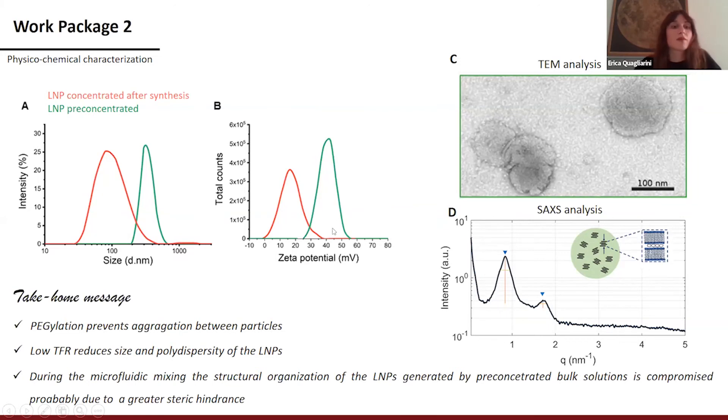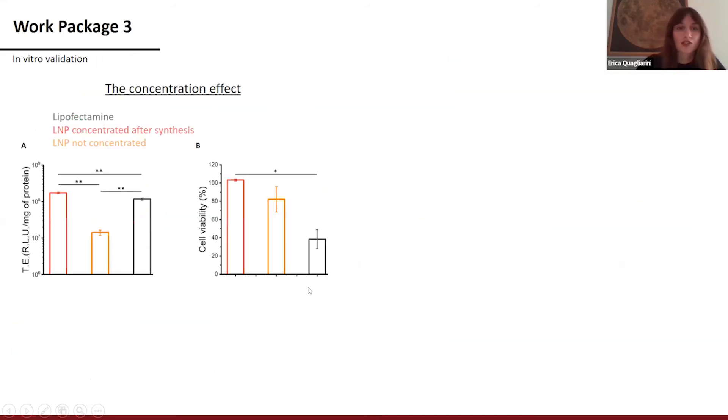As a take-home message, we can say that PEGylation prevents aggregation between this kind of complexes. That by decreasing the total flow rate of the microfluidic mixing, the size and the polydispersity of the sample decreases. And also that during the microfluidic mixing, the structural organization of the complexes generated by the first approach, that is the pre-concentration method of the bulk solution, is compromised. And probably this is due to greater steric hindrance in the microfluidic channel.